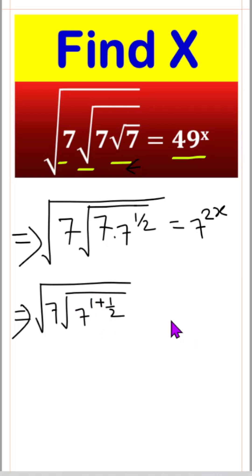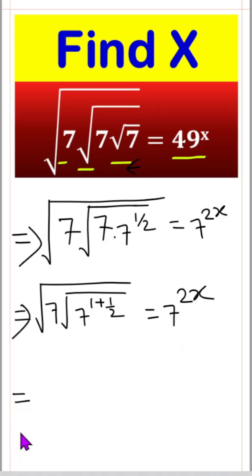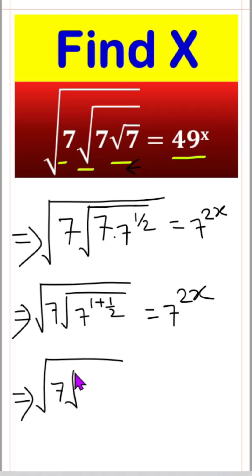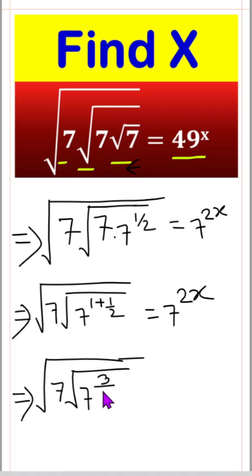So we have 7 to the power 1 plus 1/2 equals 7 to the power 2x. Taking the root 7 again, once we make the LCM it will be 7 to the power 3/2 equals 7 to the power 2x.